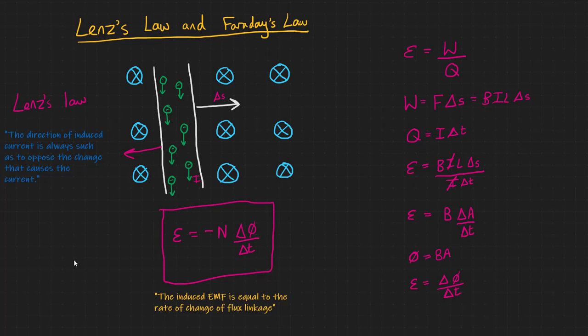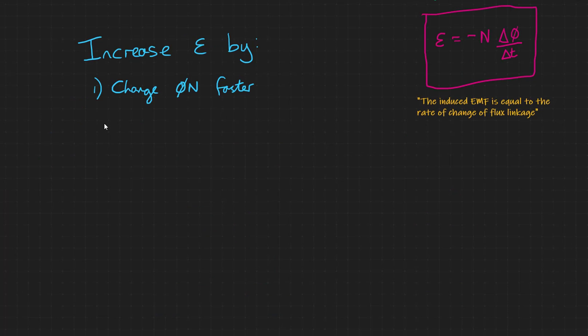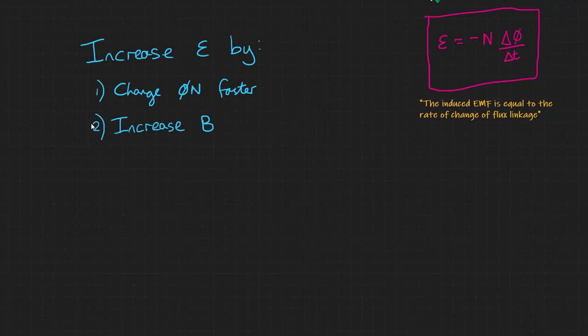It also gives us a few clues about things that we can do to increase the EMF. For example, we can change the flux linkage faster, for example, by spinning a coil faster in a magnetic field. Or we can increase B, the magnetic flux density. If we increase the flux density, that means we increase the flux. And therefore, we increase the rate of change of flux linkage. We'll get a higher EMF. Or we can wind more turns on our coil and increase N. Or we can increase the size of our coil so that it sweeps through a larger area and therefore has a higher flux linkage.